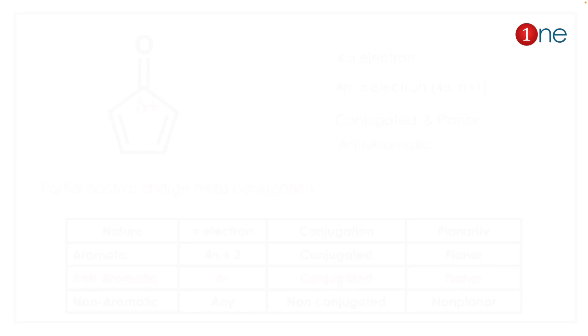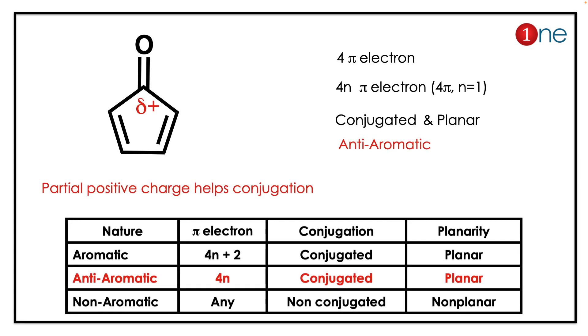The answer will be simple if you know the partial charge on the carbon due to the electronegativity difference. Carbon possesses positive charge, oxygen possesses negative charge. So what really happens is the positive charge on the carbon helps with the conjugation.